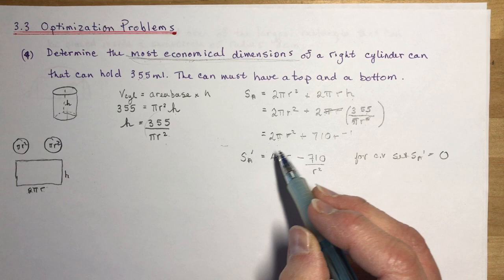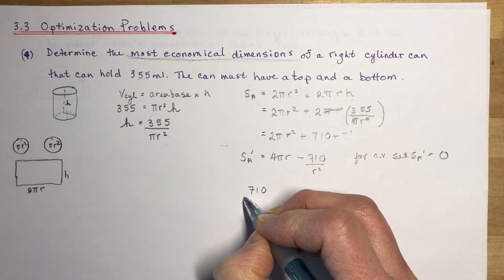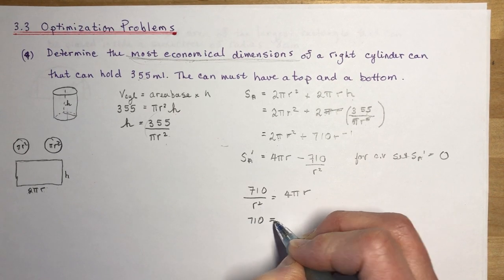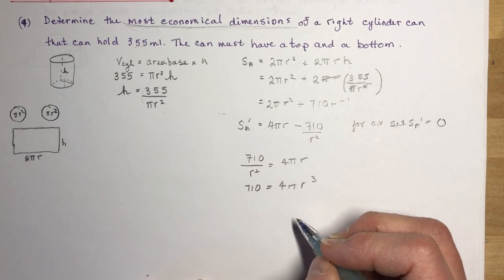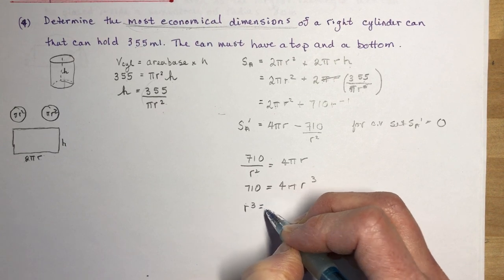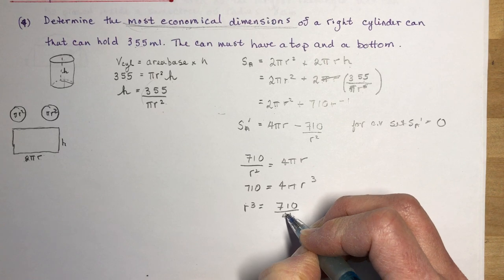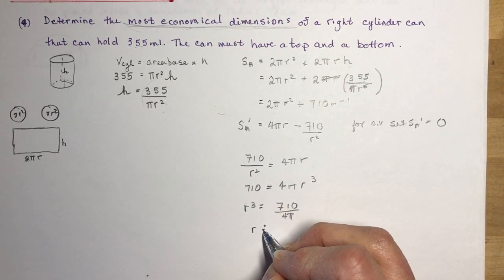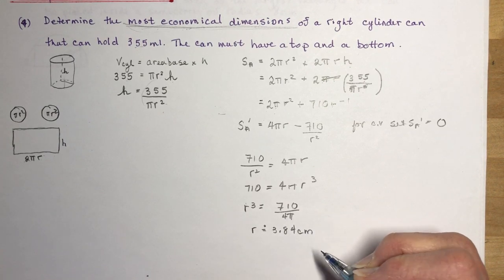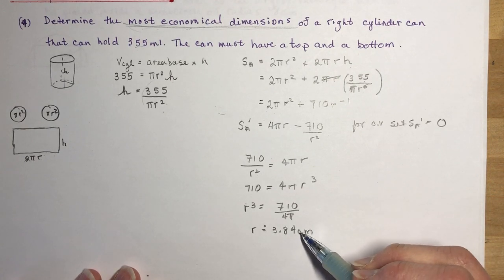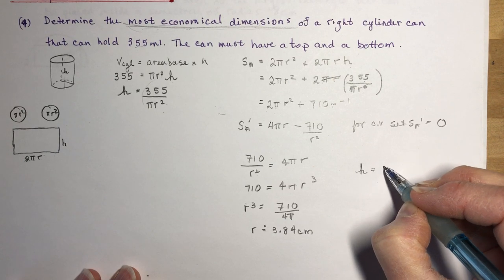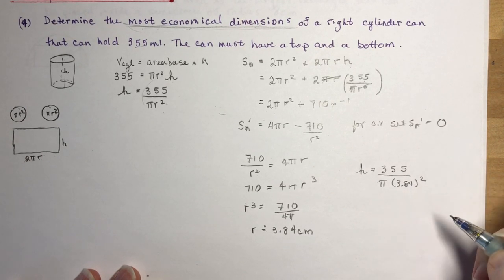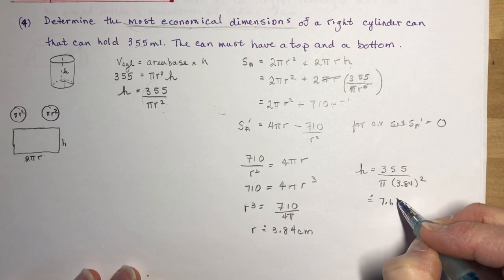Setting SA′ = 0: move 710/r² to the other side, giving 710/r² = 4πr. Multiply both sides by r²: 710 = 4πr³. Therefore r³ = 710 / (4π). Taking the cube root on a calculator gives r ≈ 3.84 centimeters. Now I know the radius, but I also need the height. Using our earlier expression h = 355 / (π · 3.84²) gives h ≈ 7.66 centimeters.